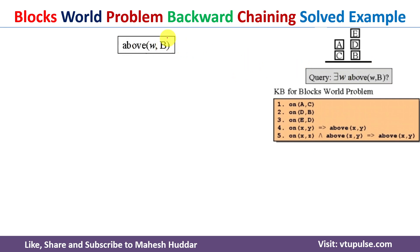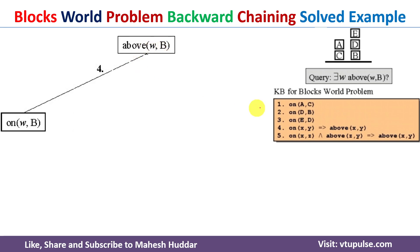To solve the query above(w, b), we have two possibilities: we can go with rule 4 or rule 5. If we go with rule 4, above(x, y) can be written as on(x, y). Here x is equivalent to w and y is equivalent to b, so we get on(w, b) as one branch.